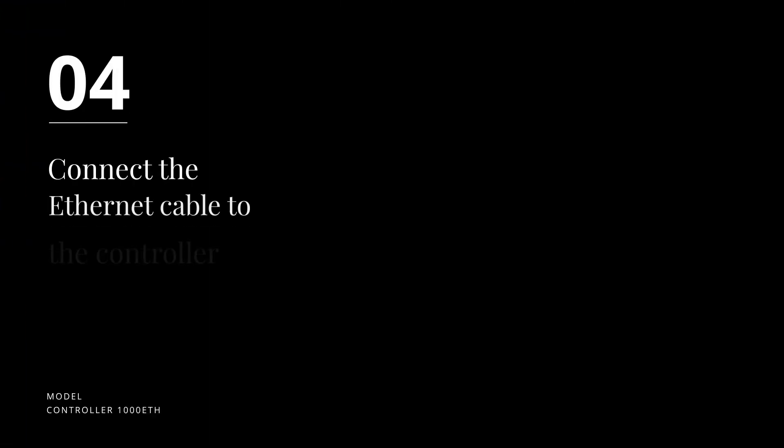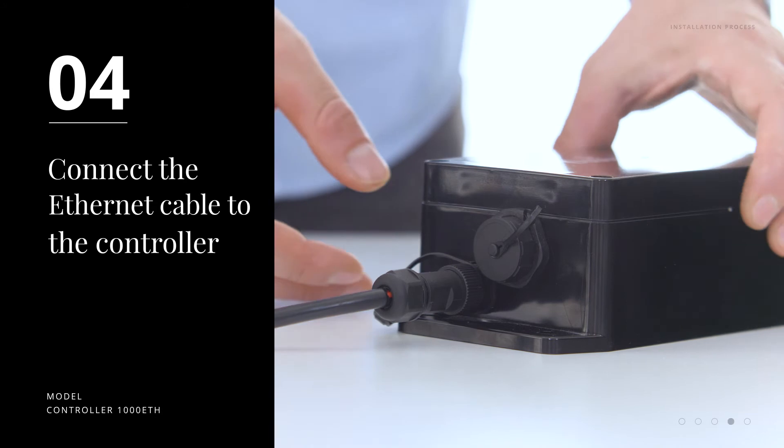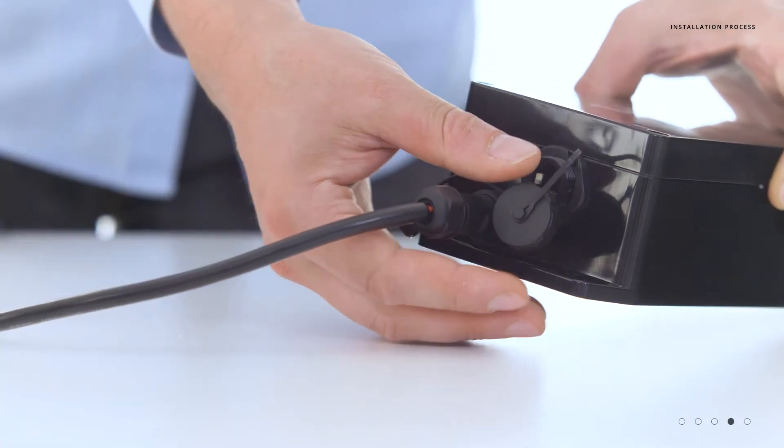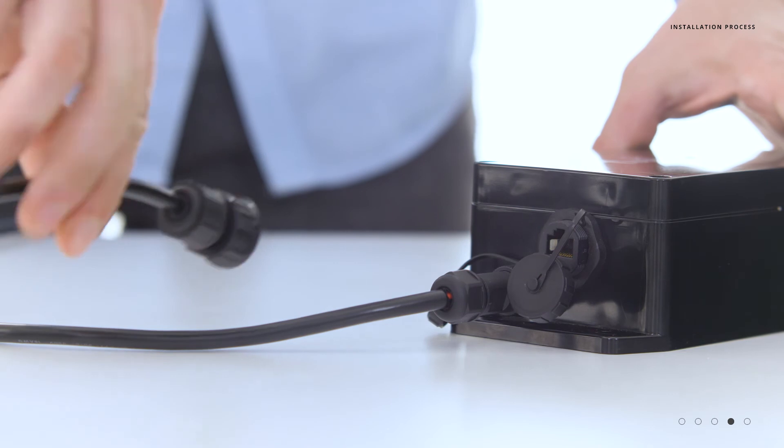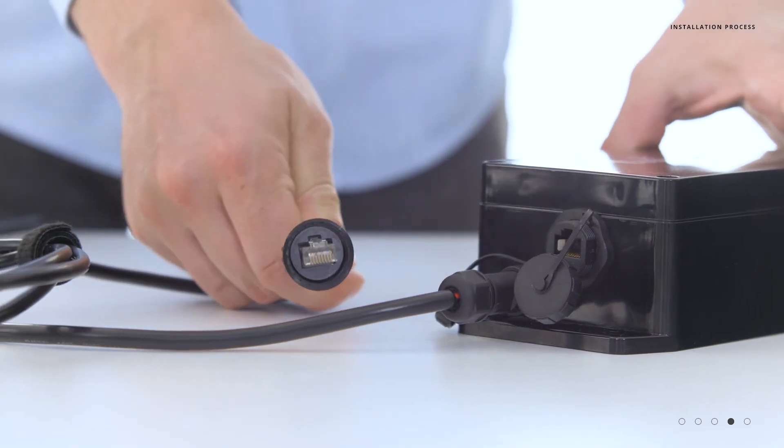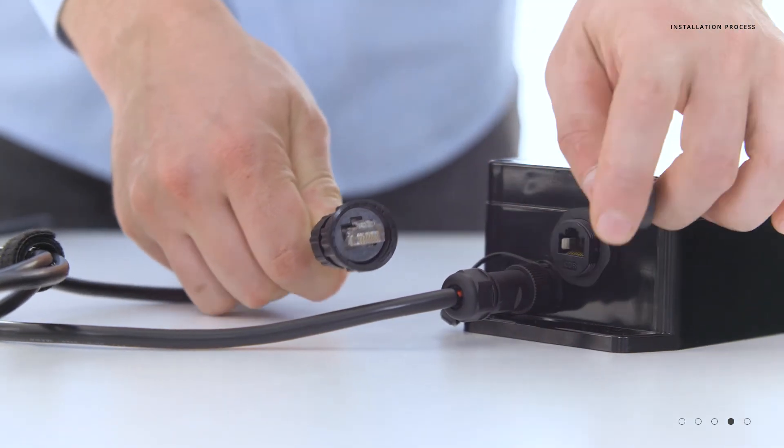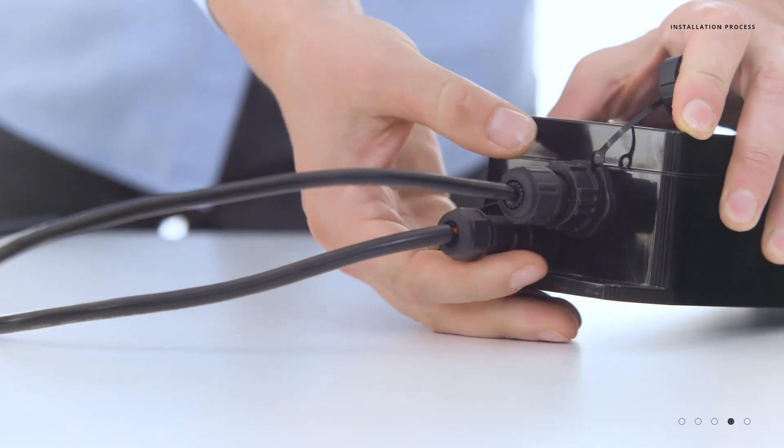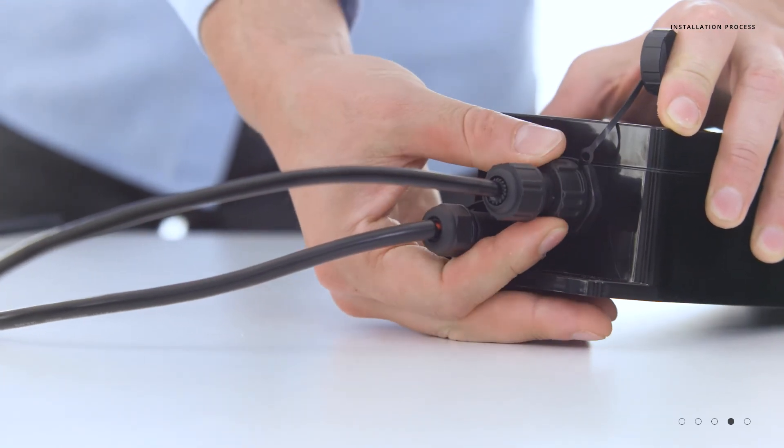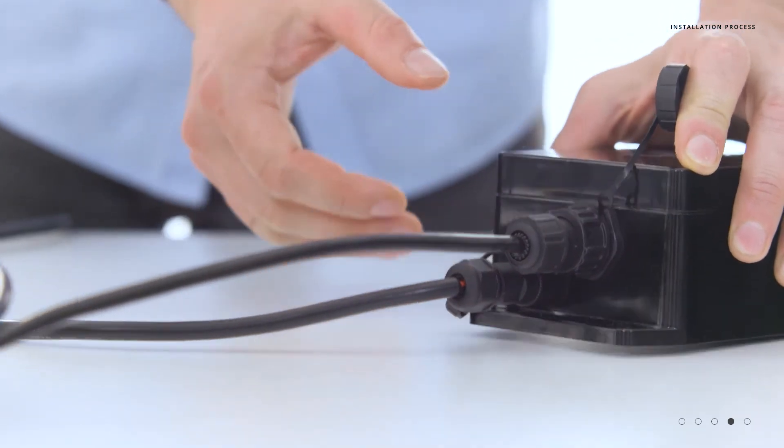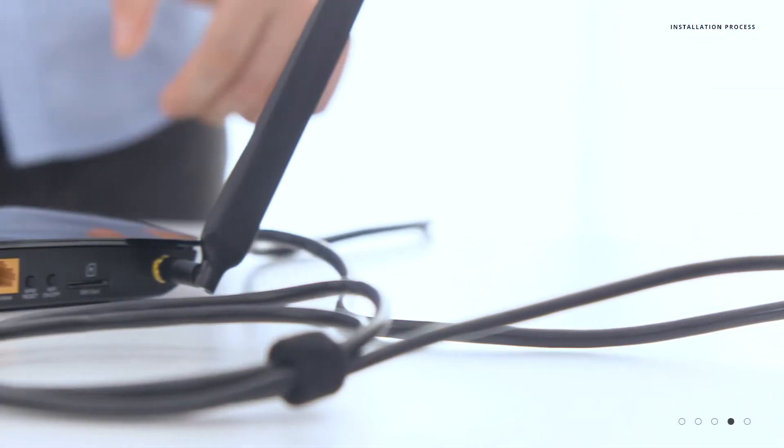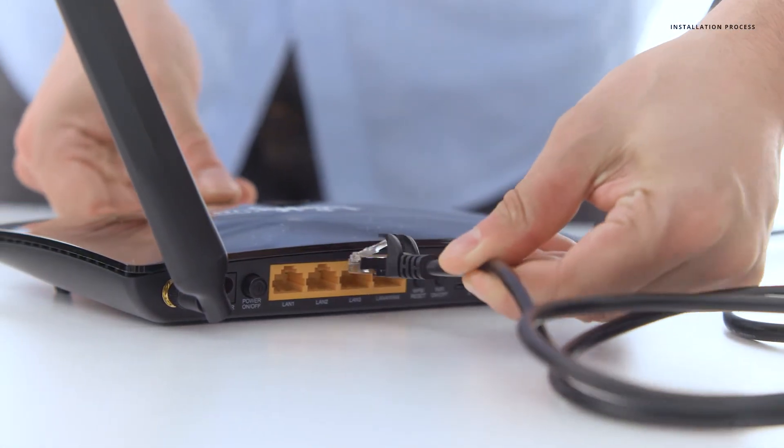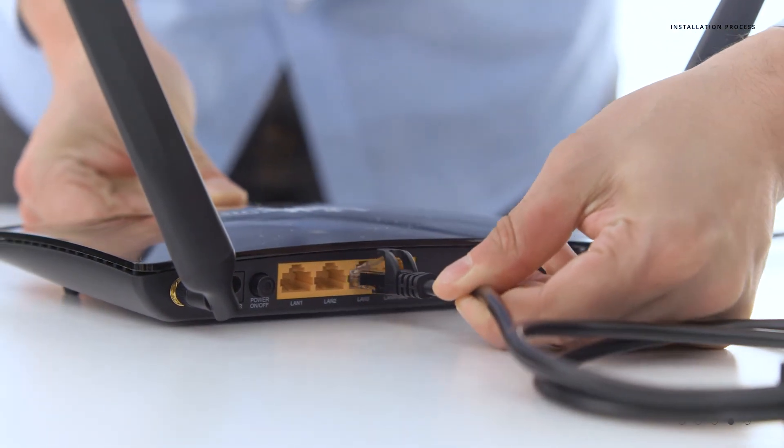Step four, connecting the ethernet cable. On the side of the controller, unscrew the larger cap. Take your Cat5 cable with the cable gland end, plug it into the controller until you hear a click, and then tighten down the collar to make sure that we are all watertight. With the other end of your cable, plug it into the router into one of the ports labeled one through four.